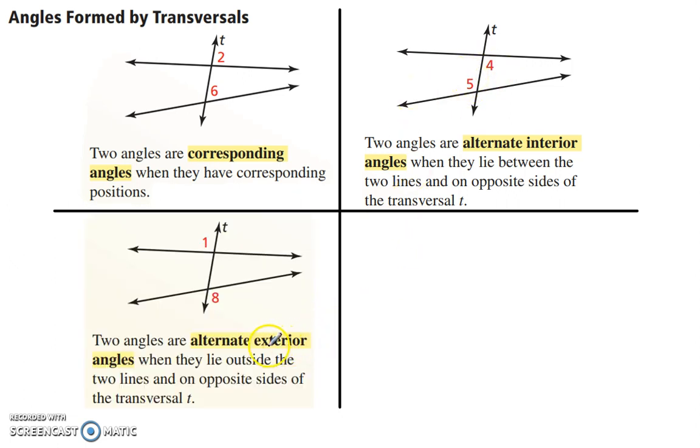So alternate exterior, as you could probably guess, exterior is on the outside of those two lines. And then alternate, again, means on opposite sides of the transversal.